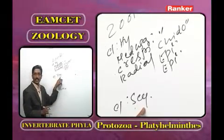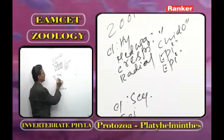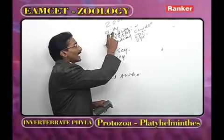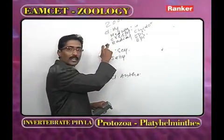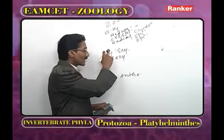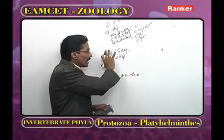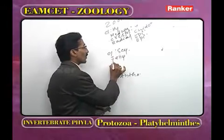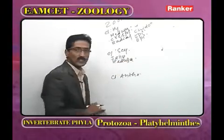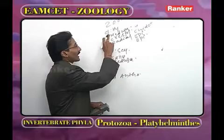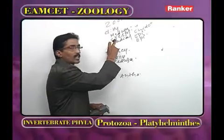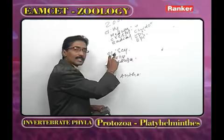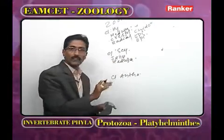The second class is Scyphozoa — common name jellyfishes. In Hydrozoa most animals are marine, only Hydra is in fresh water. In Scyphozoa, all animals are marine. The main zooid is medusa. In Scyphozoa the medusa lacks velum — called acraspedote medusa. Velum helps in the movement of the organism.